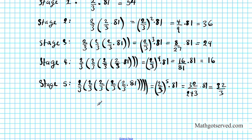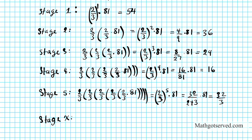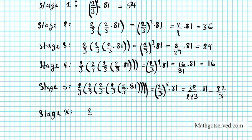There's a clear pattern here. What about stage x? You notice the power of 2/3 is simply the stage number. At stage 0, you multiply by (2/3)⁰ = 1, giving 81. At stage 1, (2/3)¹ times 81. At stage 2, (2/3)² times 81. So for stage x, you simply have (2/3)^x times 81.